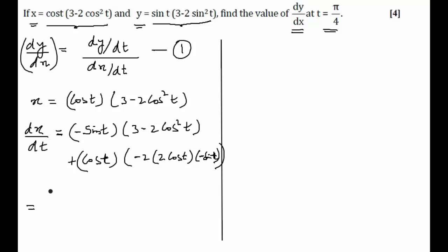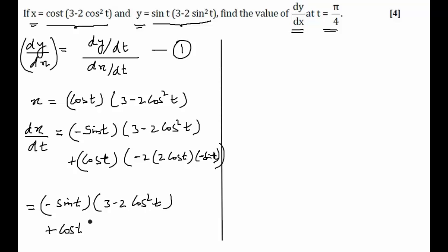So dx/dt is now equal to minus sin(t) into (3 minus 2cos(t)), plus cos(t) into — the minus minus becomes plus — overall giving 4 times sin(t) into cos(t). Let us keep this expression as it is for now.